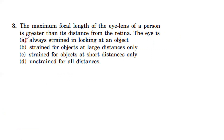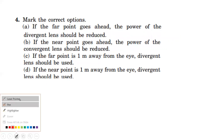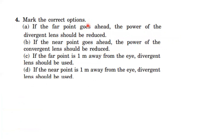Next option: mark the correct options. If the far point goes ahead, the power of its divergent lens should be reduced — this is correct. The second option: if the near point goes ahead, the power of the convergent lens should be reduced. If the far point is 1 meter away from the eye, a divergent lens should be used — this is correct. So in this question, option C is correct.